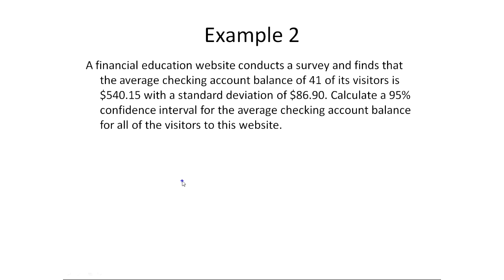Now in the last problem we were told that we had a population standard deviation in example one. This time we're not told that. In fact it says the average checking account balance of 41 of its visitors is $540.15 with a standard deviation. So that phrase right there is telling me that this is a sample standard deviation. So this is no longer sigma, this is s.